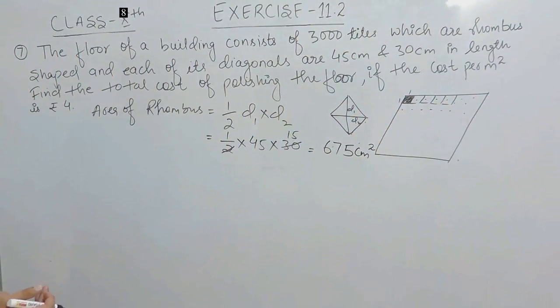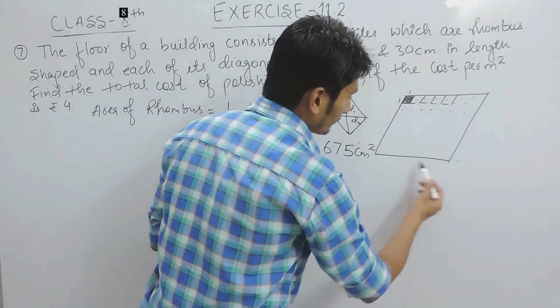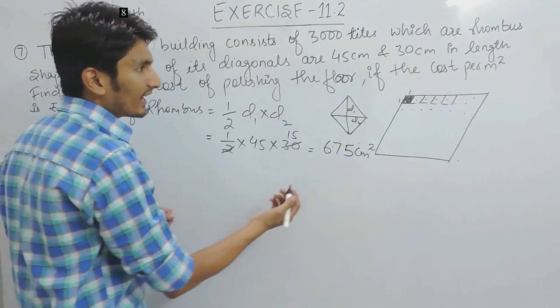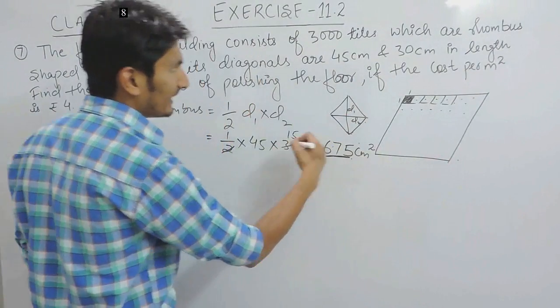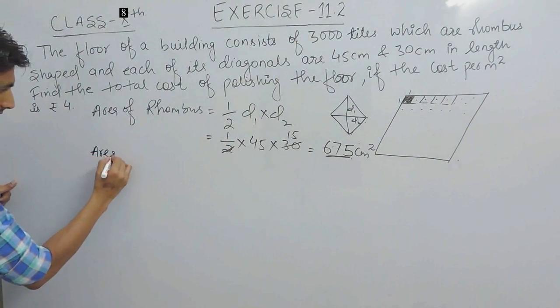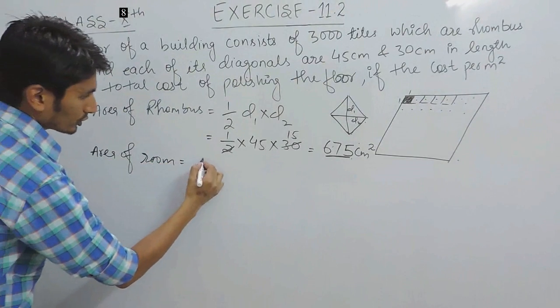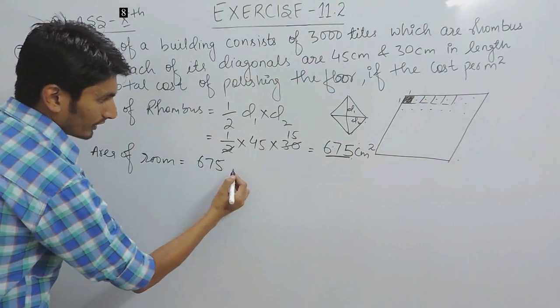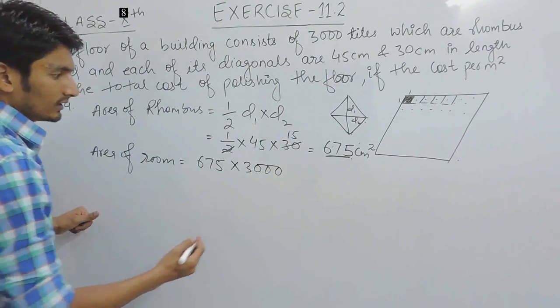If I have to find the area of this whole room, because there are 3000 tiles and the area of 1 tile is this, so clearly the area of 3000 tiles must be area of room, which must be equal to the area of 1 rhombus multiplied by the number of rhombus.